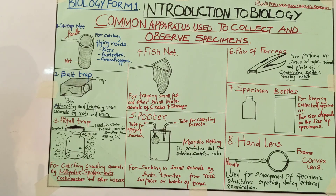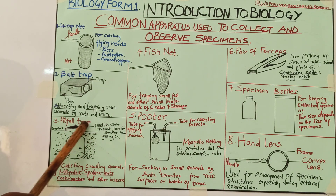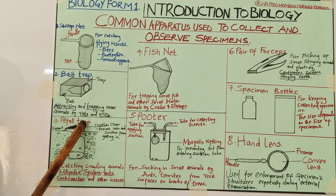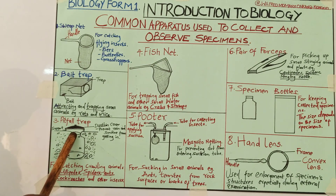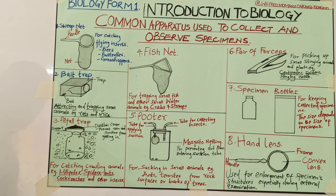The third apparatus is the pitfall trap. There is what we call a dustbin cover. This is a hole that has been dug, and then a container is put underground. Then there is a dustbin cover on top of that hole, which has some kind of container for collection of specimens. The dustbin cover has supports on both sides.